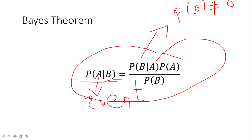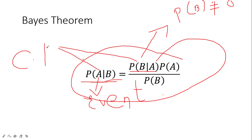Now moving to the second term: P(B|A) is also a conditional probability. We call these two — P(A|B) and P(B|A) — both conditional probabilities. Here, A is occurring given B in the first term, and B is occurring given A in the second term. When A is occurring, B should be true; when B is occurring, A should be true. It's the same thing from a reverse perspective.